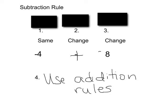So now we have negative 4 plus negative 8. So our 4th step is to use addition rules. So negative 4 plus negative 8 is negative 12. So what we originally had was negative 4 minus 8 and the result is negative 12.